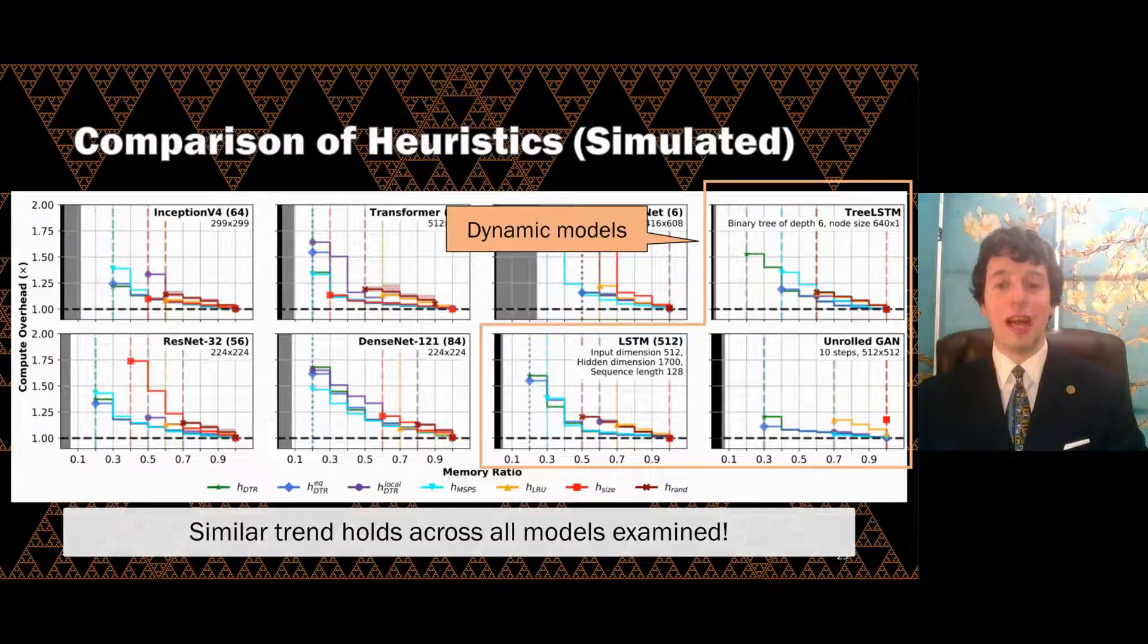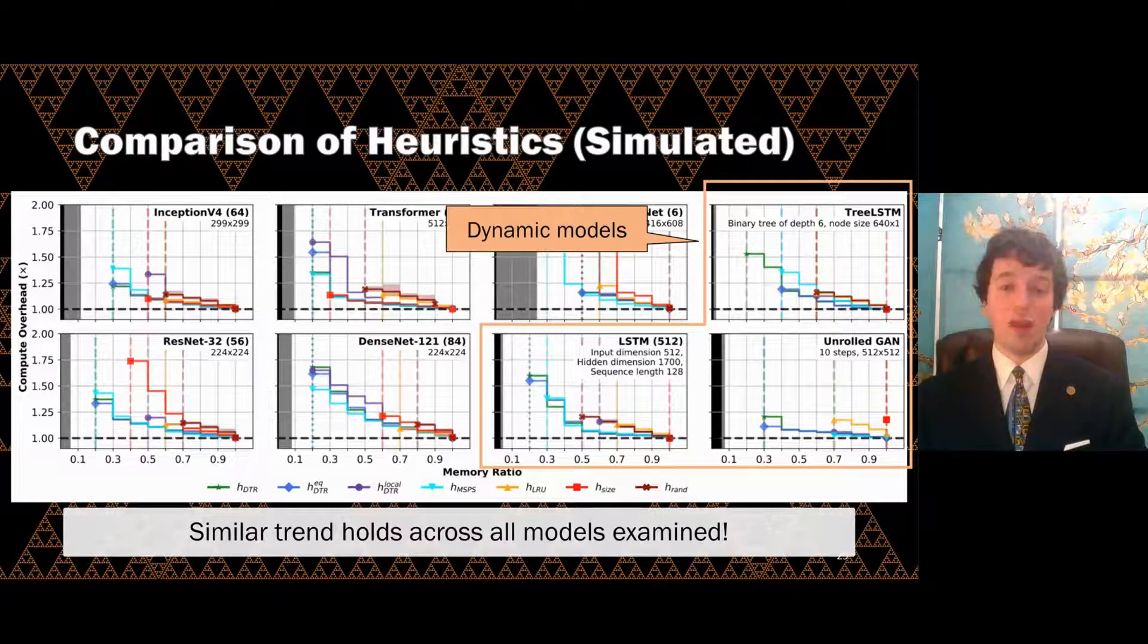We examined eight models in total and found similar trends across them. These included dynamic models. Unrolled GAN in particular features second-order derivatives for meta-learning, which DTR was able to handle without any special adaptations.